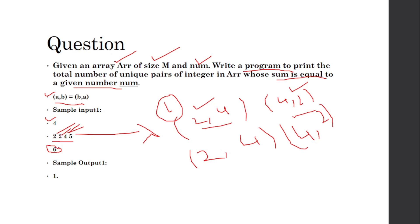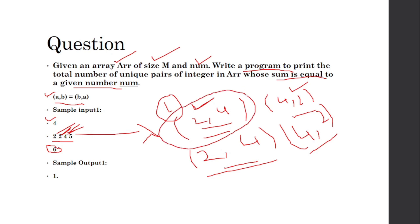Even if you pick a different 2 from the array and pair it with 4, that's still treated as the same pair (2, 4). The rule is: a comma b equals b comma a. So at the end the output is 1 — only one unique pair.